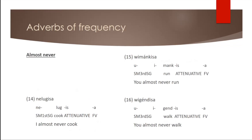Almost never, once again, works differently from almost, because here you always have the attenuative marker 'is' in these sentences. So in monkey sir, you almost never run, or wi gendisa, you almost never walk.